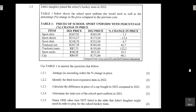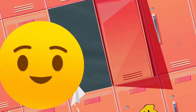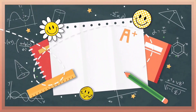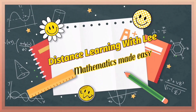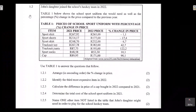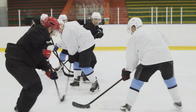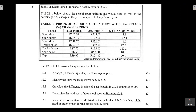Question 1.2 says that John's daughter joined the school's hockey team in 2022. Table 1 shows the school sports uniform she would need, as well as the percentage change in price compared to the previous year. We are given the items, the price in 2021, the price in 2022, and the percentage change — whether there was a percentage decrease or increase.